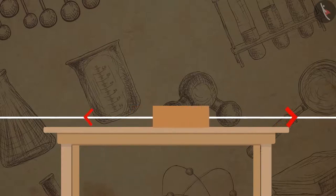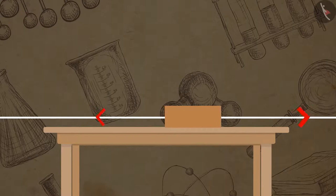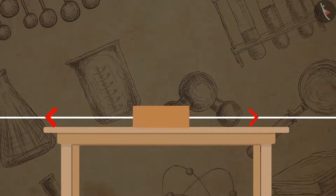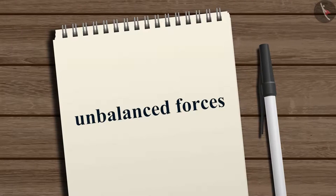Similarly, the block will move towards the left if the pulling force on the left string is greater than the right string. Such forces are called unbalanced forces. Here, as the forces are not balanced, the block moves, that is, it changes its state of rest.